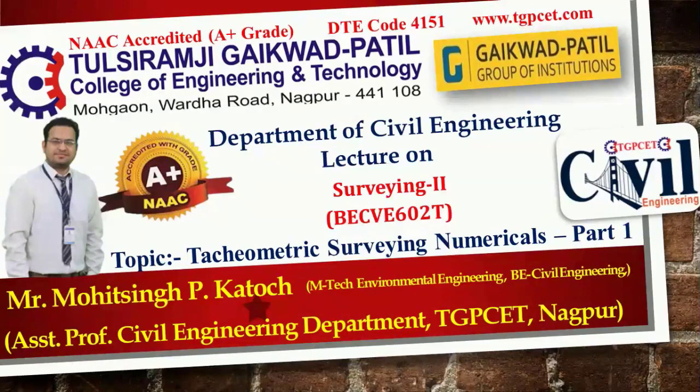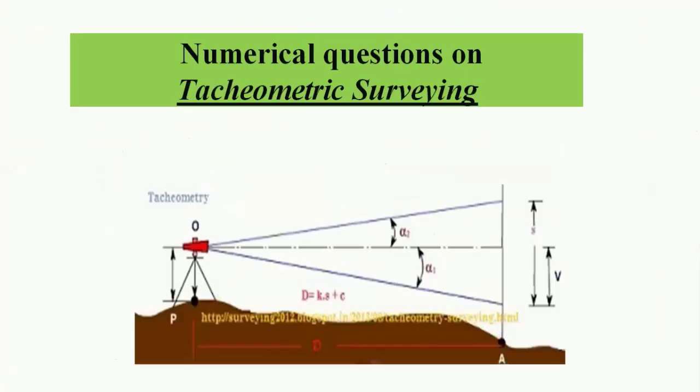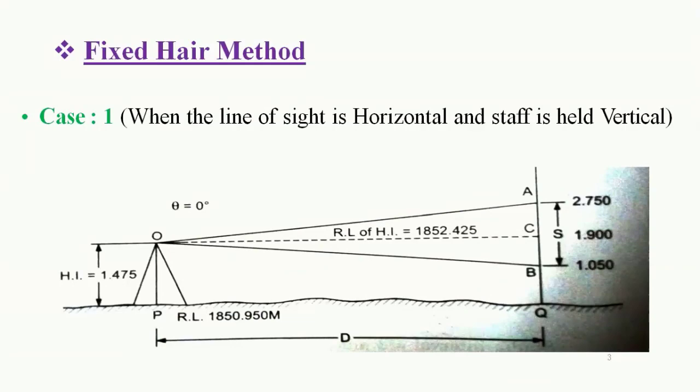This video will be divided into certain parts depending upon the types of methods which are used for solving these numericals. In tachymetric surveying there are basically two main types of methods: first is fixed hair method, second one is tangential hair method. Today we are going to see few cases of fixed hair method.